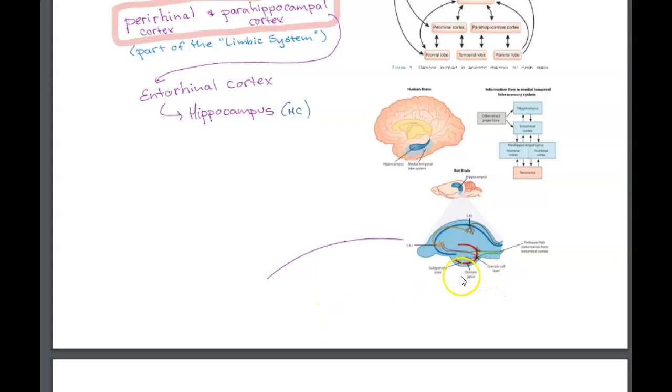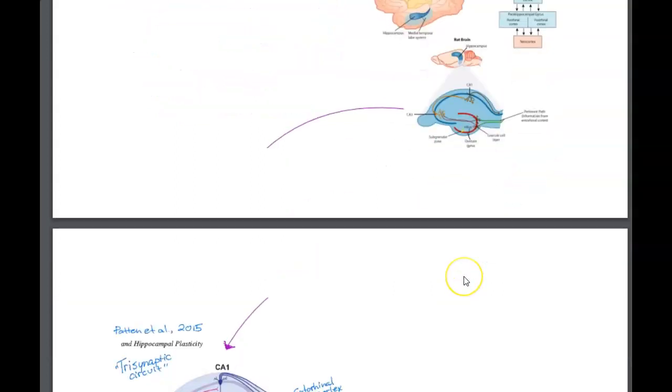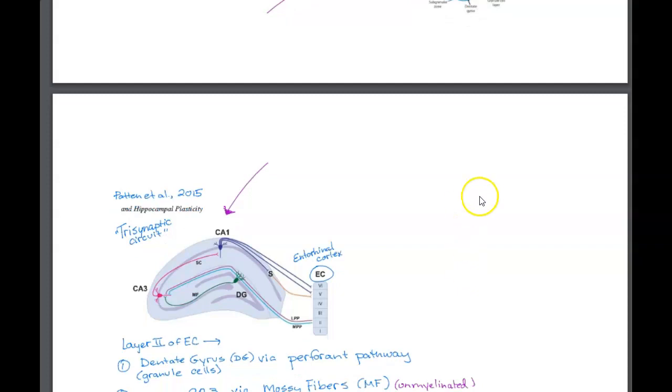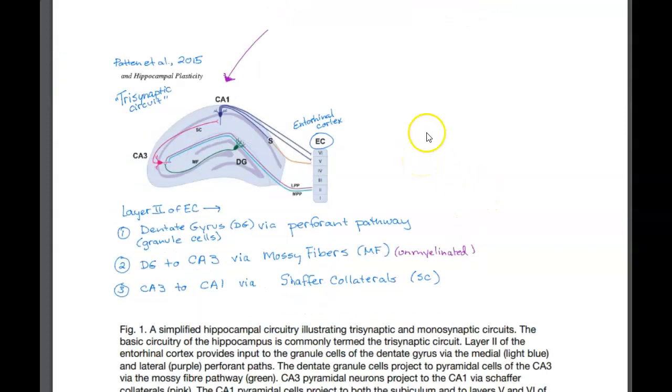The word hippocampus means seahorse, and it's because there is kind of a curly, seahorse-looking shape here that we're going to see. This is somewhat of an enlarged version of a hippocampal area. The hippocampus, the connections that happen within the hippocampus, are very often called trisynaptic, because that's exactly what there are. There are three areas that form synapses here.